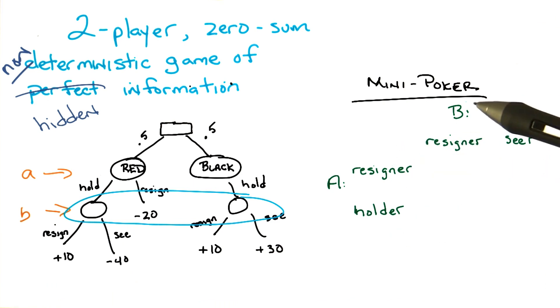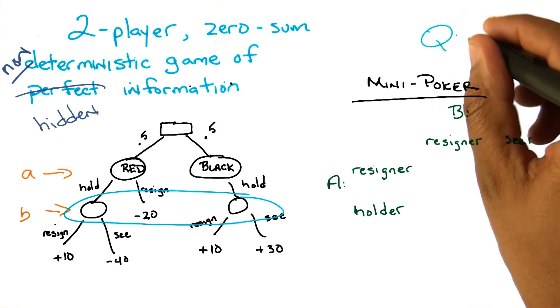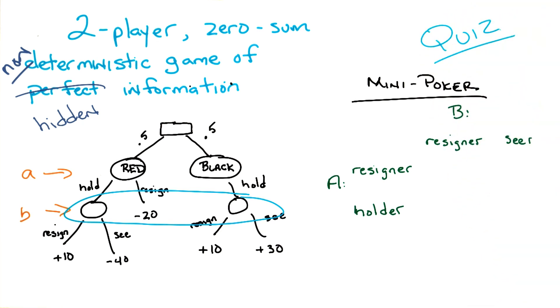Okay, so A is a resigner or a holder, B is a resigner or a seer. So, the question is, what numbers go in this matrix? And we're going to figure that out by having a quiz.